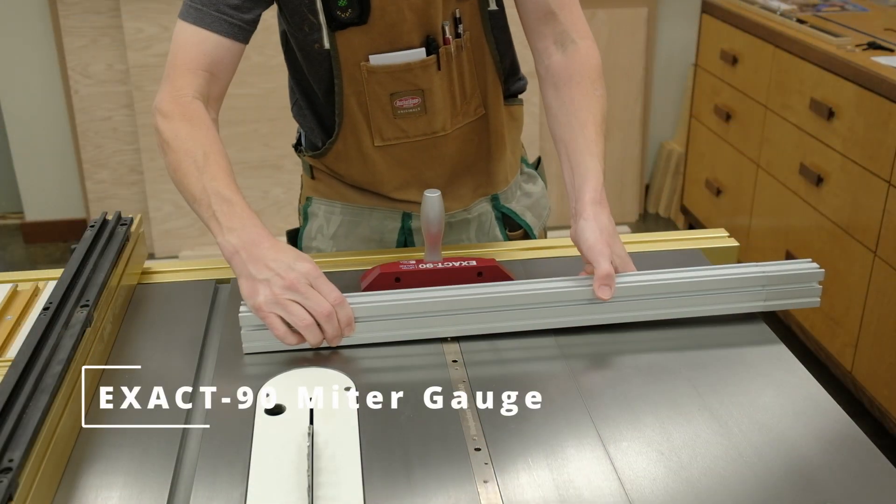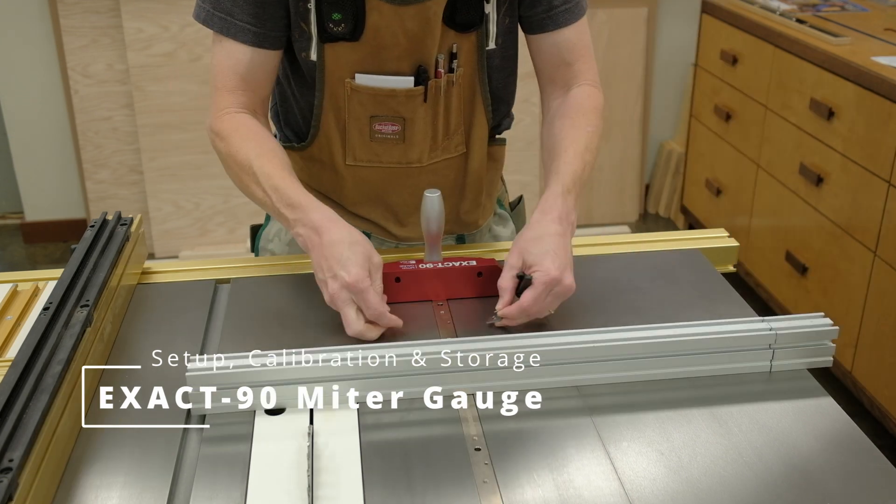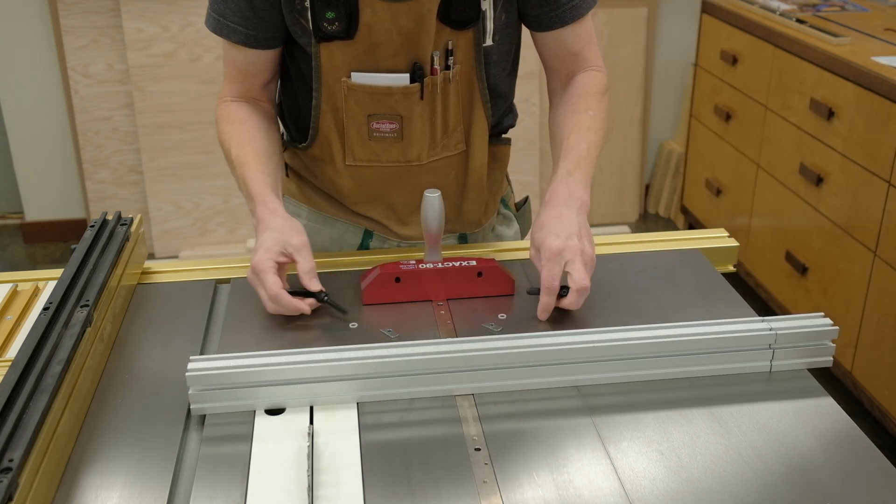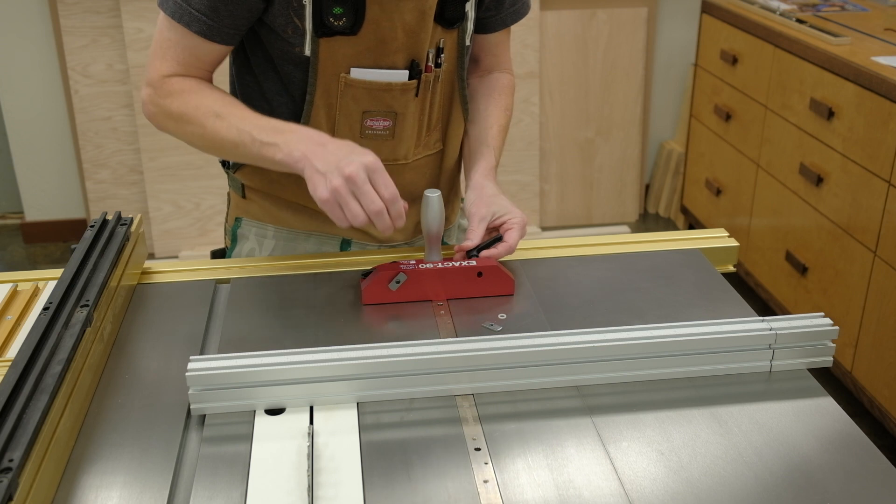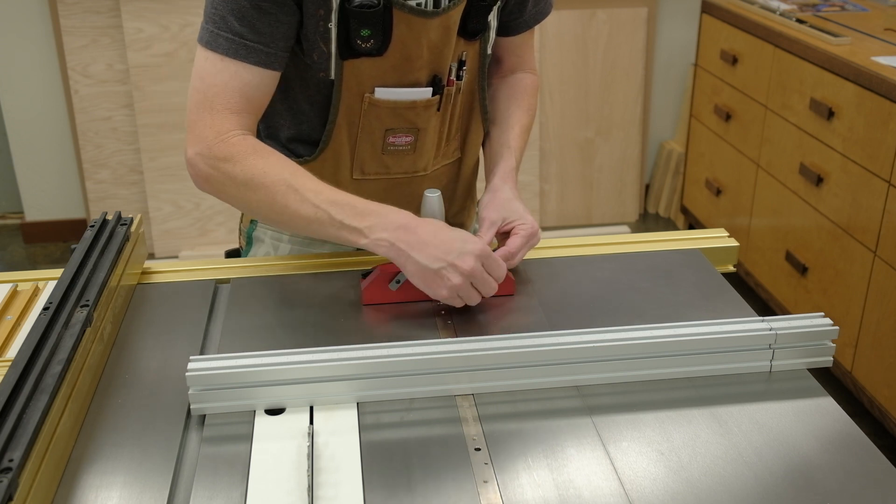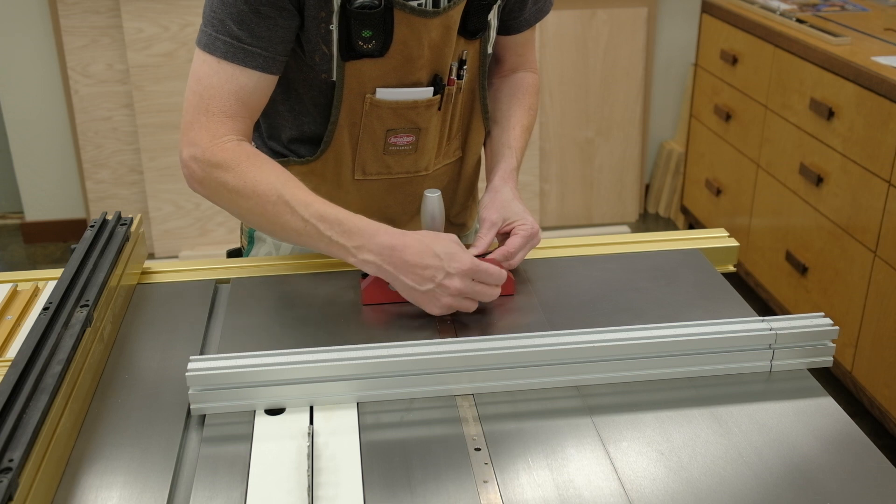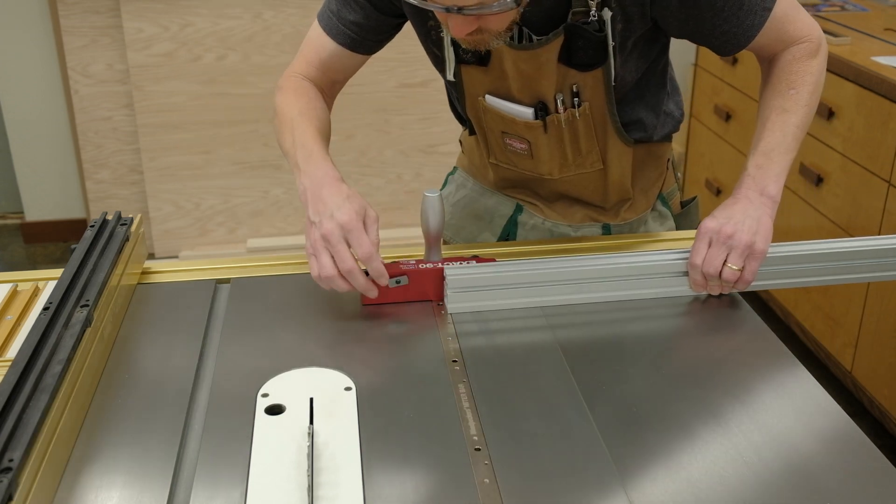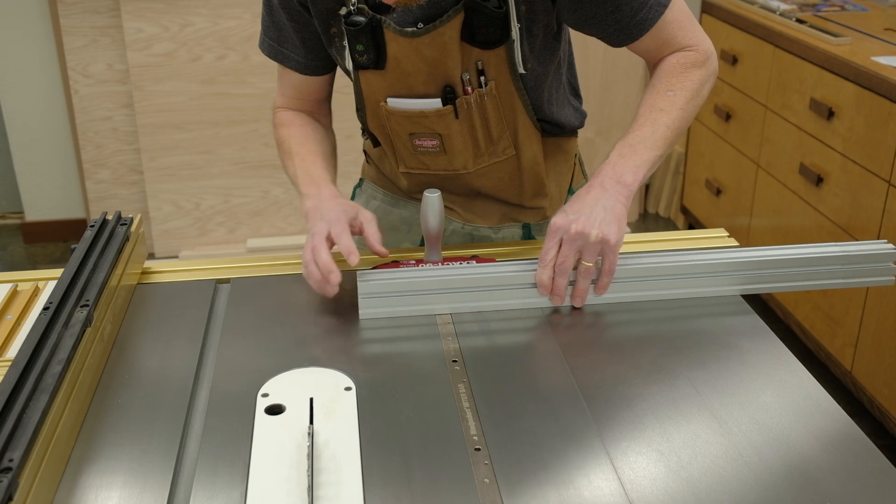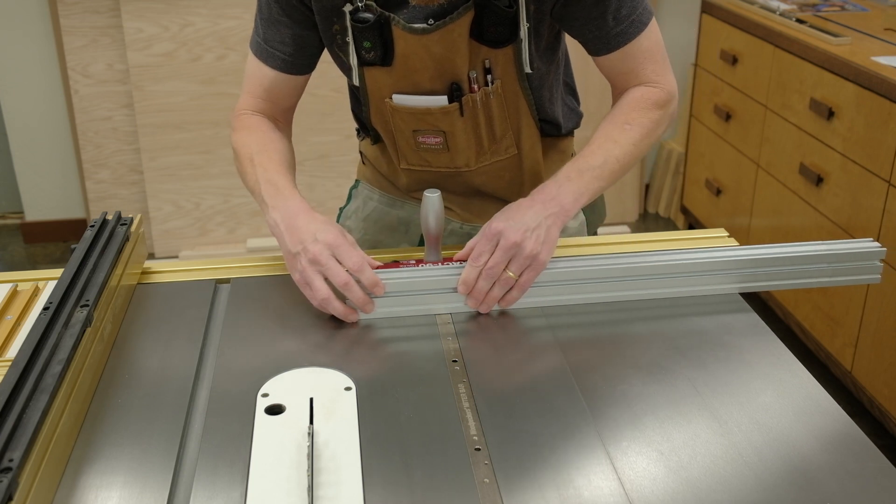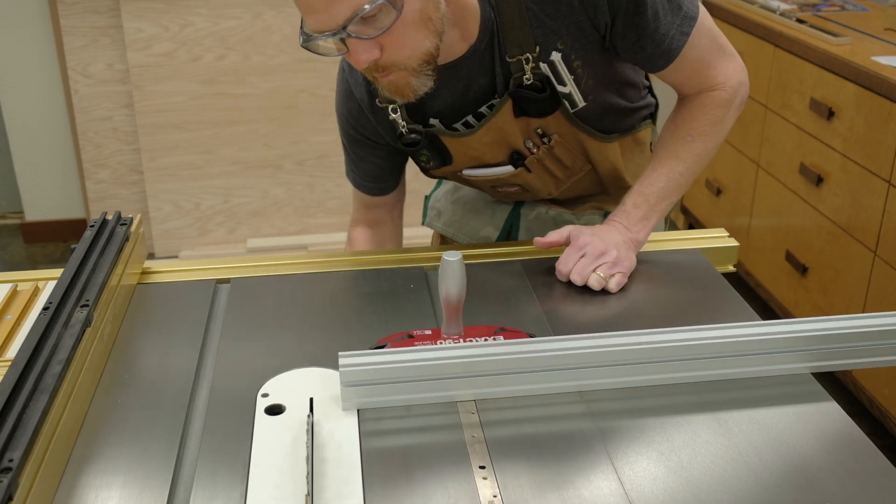There really is not a lot of assembly involved with the Xact-90 miter gauge. The miter bar, fence bracket assembly, and handle are already assembled when you take it out of the box. The first step is to install the fence onto the fence bracket assembly. There are three ratchet knobs that come with the miter gauge. Use the two longer ones and a couple of weld nuts to attach the fence to the fence bracket assembly.